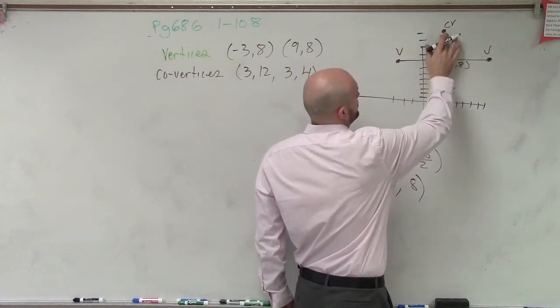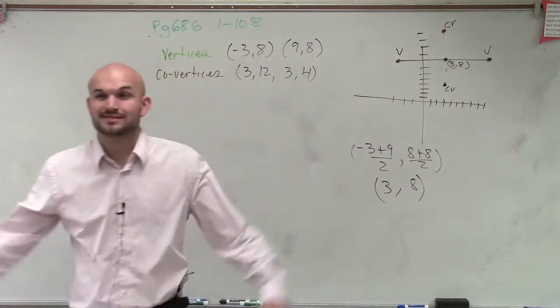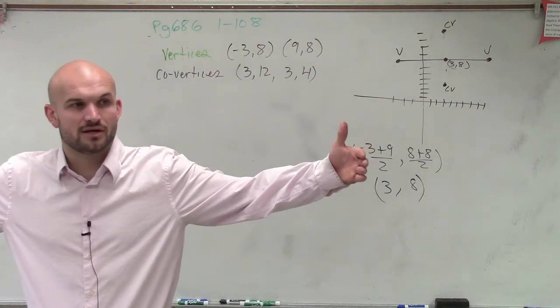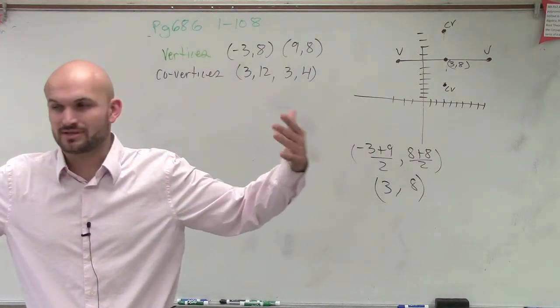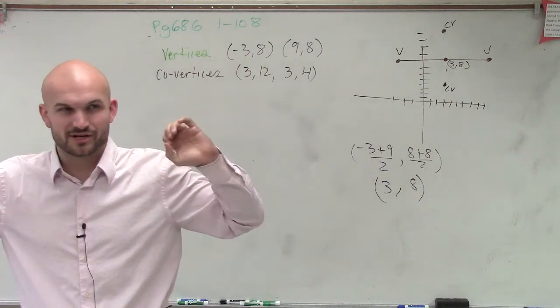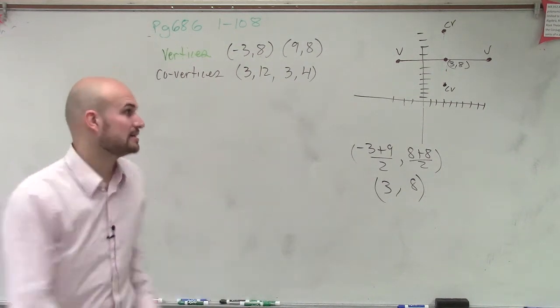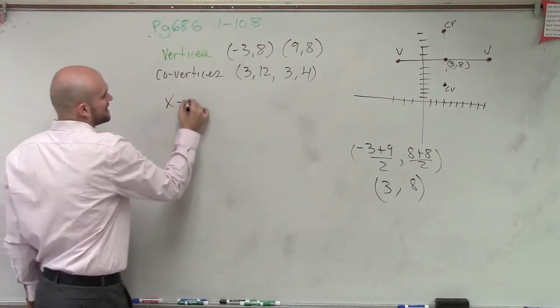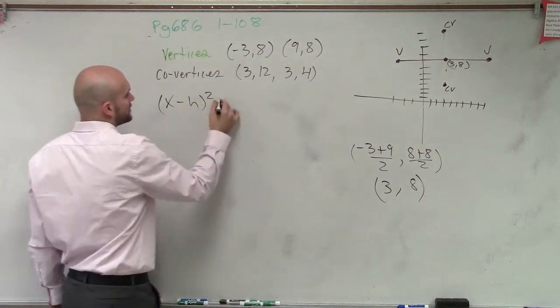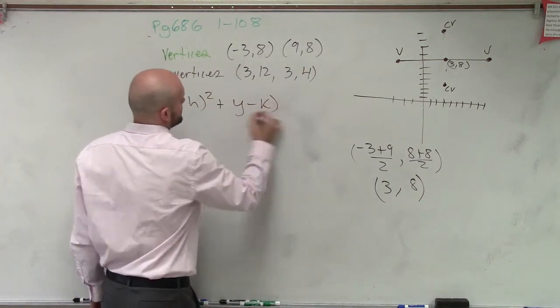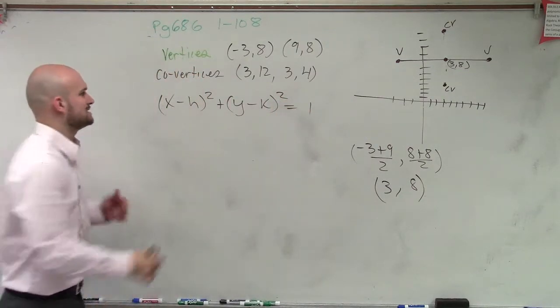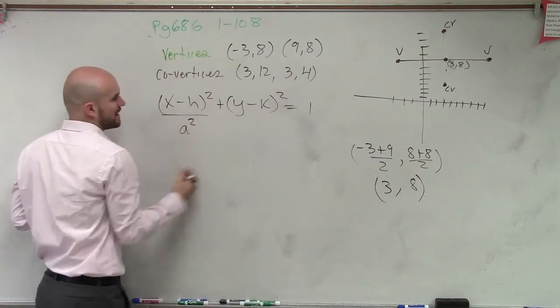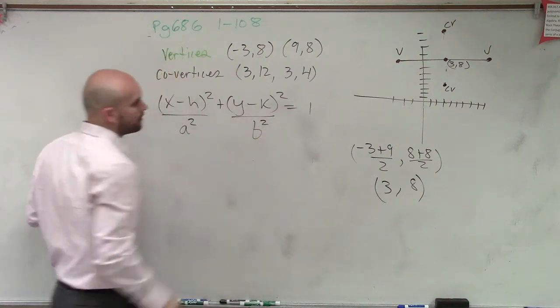So now, since we know our major axis is horizontal, in our formula, is our a squared going to be under the x or under the y-coordinate? It's going to be under the x. Very good. So our equation is going to look like this: x minus h squared plus y minus k squared equals 1. Since it's a horizontal major axis, my a squared is under my x, and my b squared is under my y.